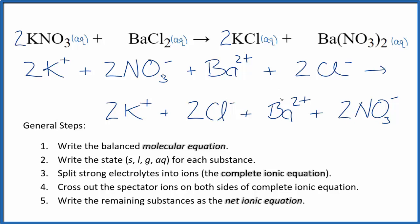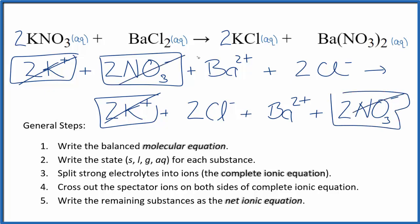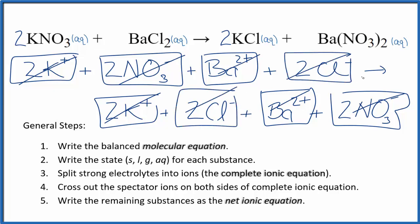For that reason, there's no reaction. If we cross out the spectator ions, the things that didn't change: potassium, we have two potassium ions. Those are spectator ions. Two nitrate ions, then again in the products, two nitrate ions. A barium ion here and in the products. And finally, two chloride ions in the reactants and products. Cross those out, and there's nothing left.